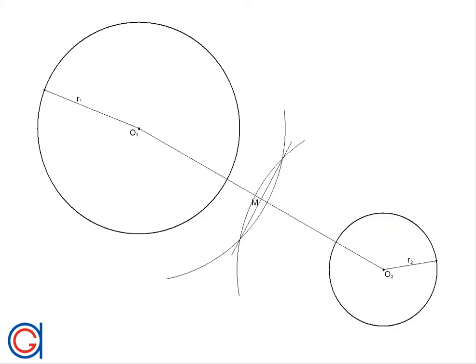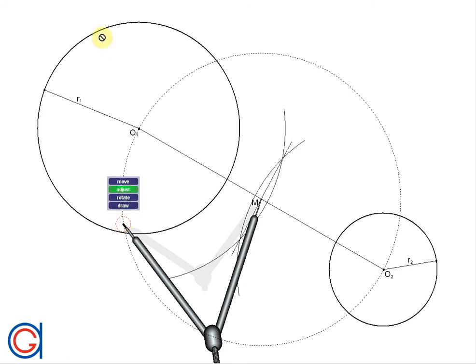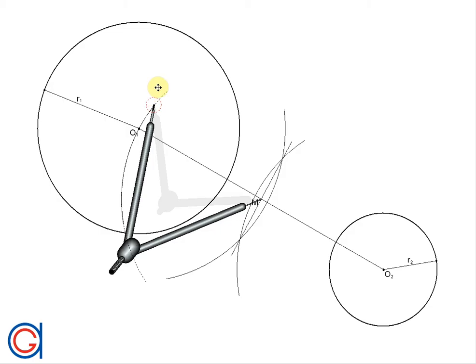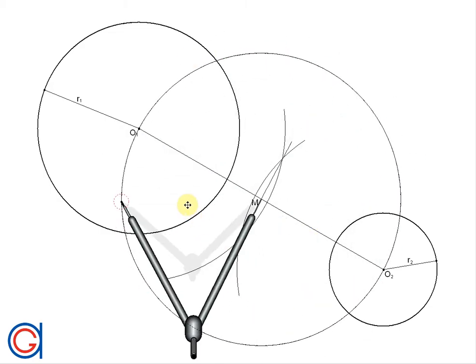So now setting our compass on M and with the radius M O1 we are going to draw a circle which passes through both origins O1 and O2 as can be seen here.